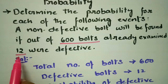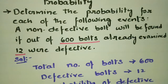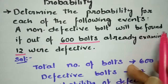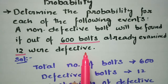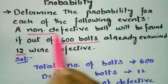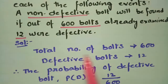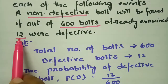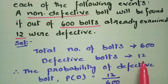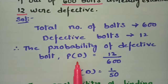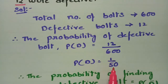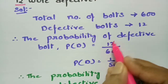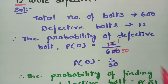The defective bolts are 12. The total number of bolts is 600. The probability of a defective bolt, P(D), is equal to 12 by 600, which simplifies to 1 by 50. So the probability of getting a defective bolt is 1 by 50.